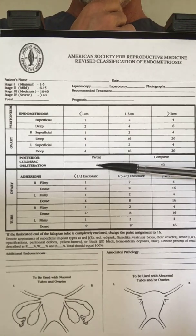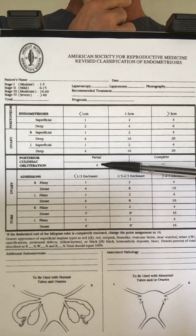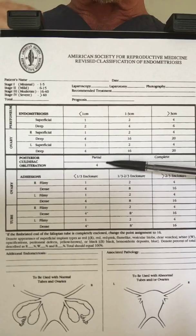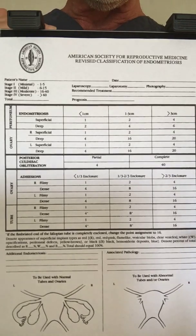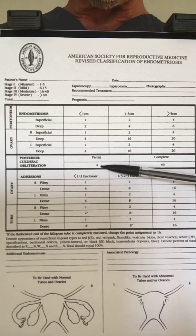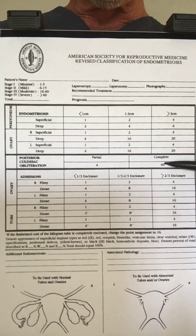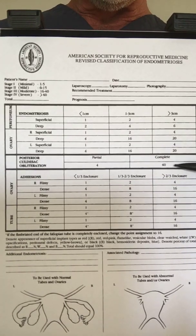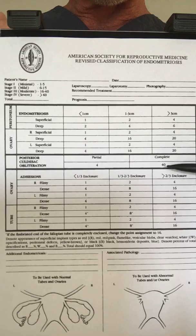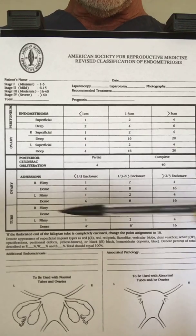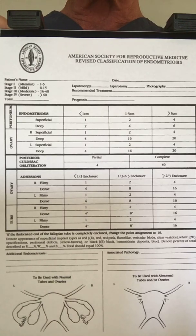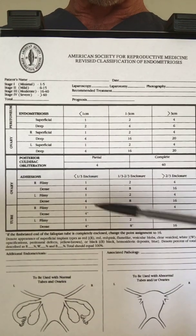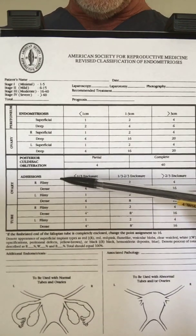The posterior cul-de-sac is the area behind the uterus and the bowel. Partial obliteration is scored lower, but it's almost like a zipper — the bowel starts to adhere to the back of the uterus. Complete obliteration right there gets you 40 points, putting you straight into stage 4. Remember, this system was made to try to predict the chance of getting pregnant after surgery, not the degree of pain — and we know it does not do that.